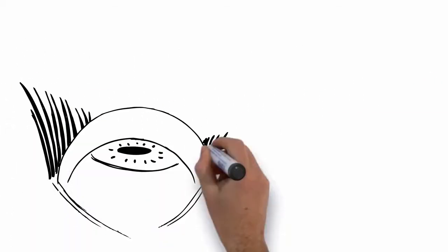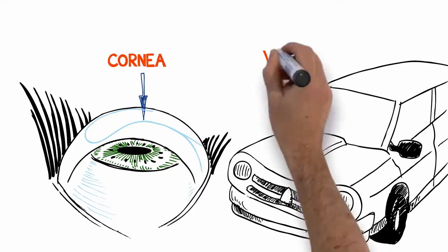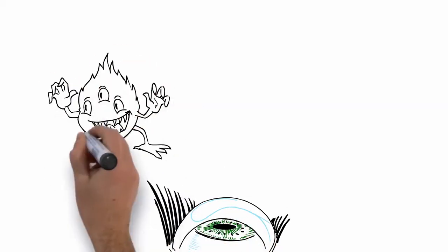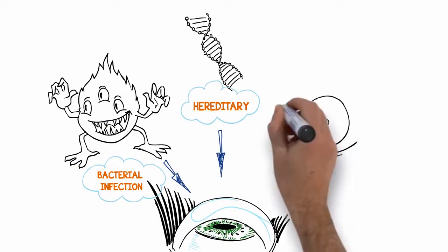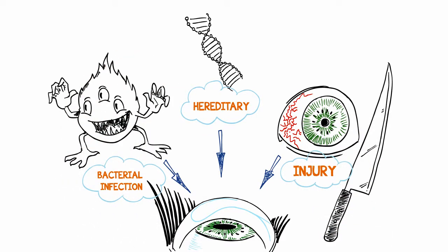The cornea is the clear cover on the front of the eye that has multiple layers, sort of like the windshield of your car. Certain diseases, such as infections and hereditary conditions, as well as scars due to injury, can cloud the layers of the cornea, causing a loss of vision.